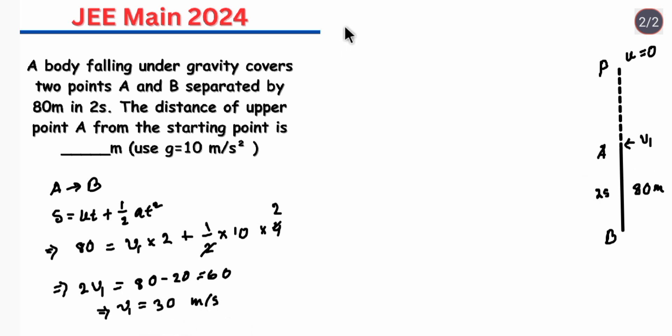Now if we consider P to A that means from going P to A if we apply the relation V2 is equals to U square plus 2AS. So here the final velocity is V1.